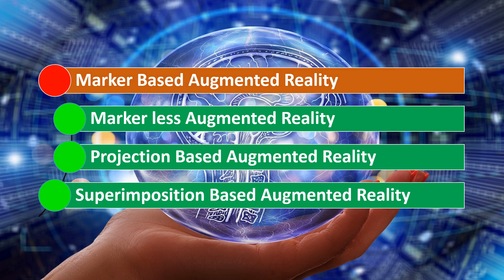Marker-based augmented reality recognizes an object and plays a corresponding 3D object for that 2D object. For example, on scanning a 2D QR code, a corresponding video plays.